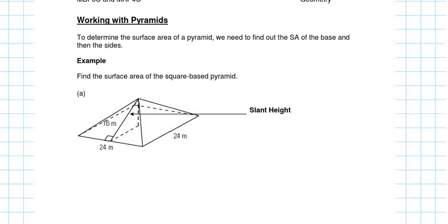Today we're going to look at the surface area of pyramids and cones, but for pyramids specifically we're going to look at square-based pyramids. The reason we focus on square-based pyramids is because they have the same side length for all four sides, which makes all four triangles equal as well.